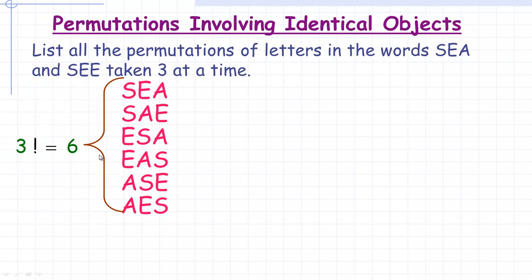There's six of those because there's three different objects and three factorial would be six. Now, if we arrange the SEE, there's less of them because two of the objects, the two E's, are identical.